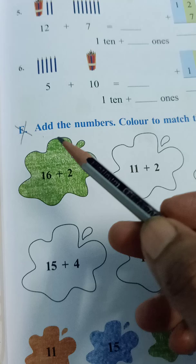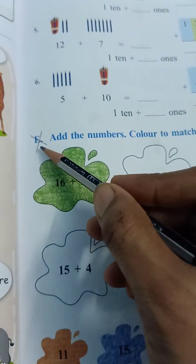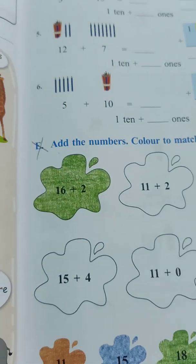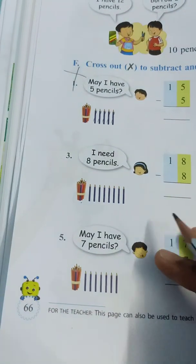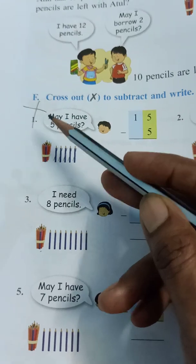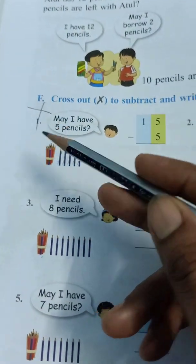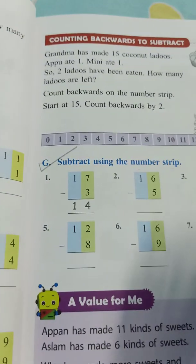64, E part you have to cross children. Cross this one. Coming to the next page number 66. F part cross children. Now coming to G.